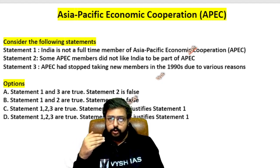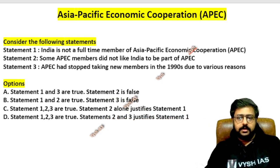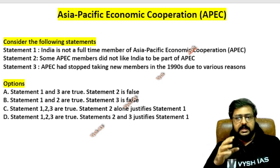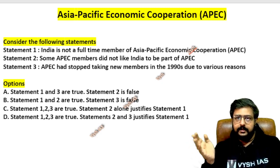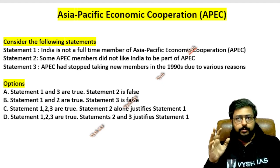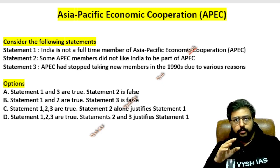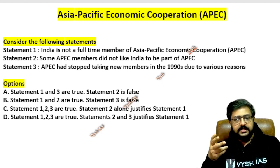Three statements are put in UPSC's latest format. First statement: India is not a full-time member of Asia Pacific Economic Cooperation or APEC. Second statement: some APEC members did not like India to be part of APEC. Third statement: APEC had stopped taking new members in the 1990s — meaning anywhere from 92, 93, 94 up to 1999. Options are in UPSC's latest format: Statement 1 and 3 are true and statement 2 is false; Statement 1 and 2 are true, statement 3 is false; All three are true and statement 2 alone justifies statement 1; or all three are true and both 2 and 3 justify statement 1.